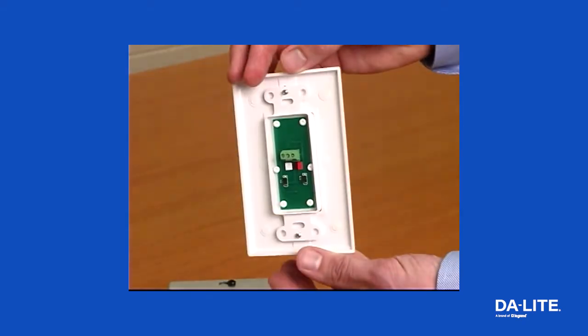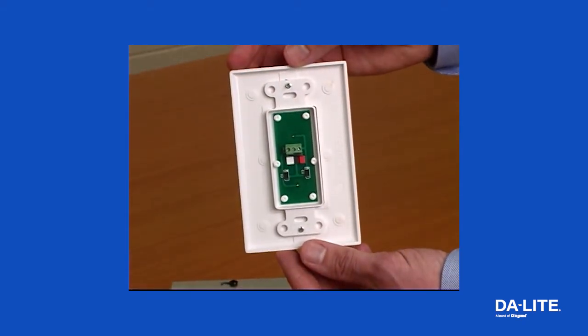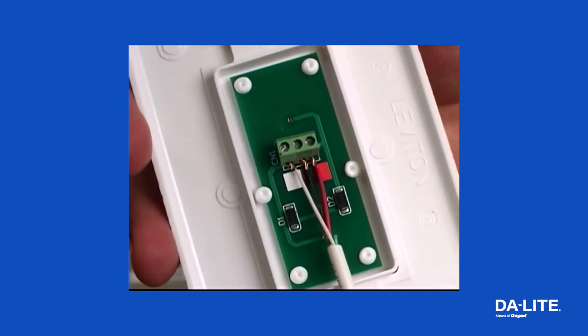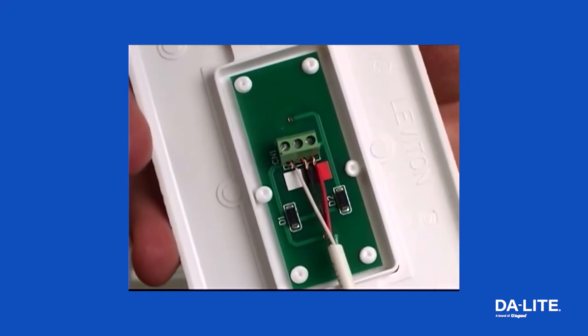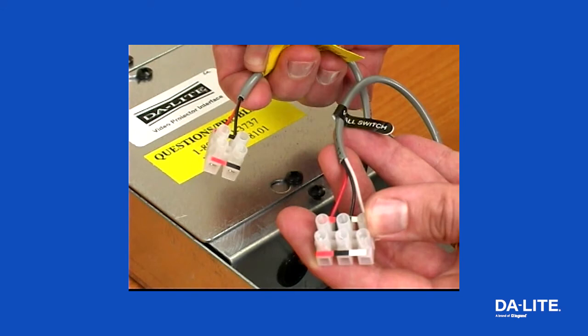When connecting the supplied low voltage wall switch, use three conductor 20 to 24 gauge wire to extend the switch to the required length. Connect the wire from the switch to the wire labeled wall switch. Never apply voltage to the wall switch lead or the VPI will be damaged.